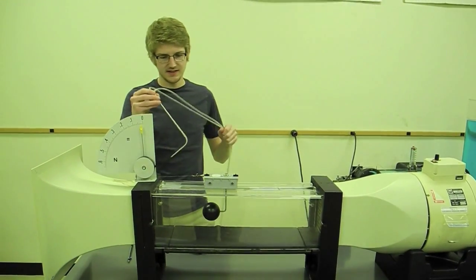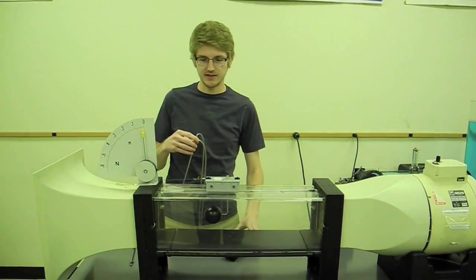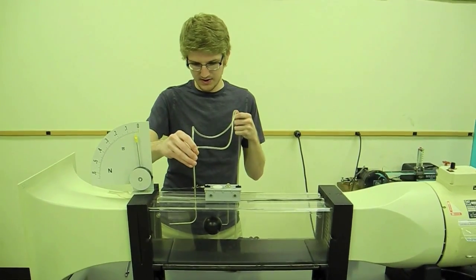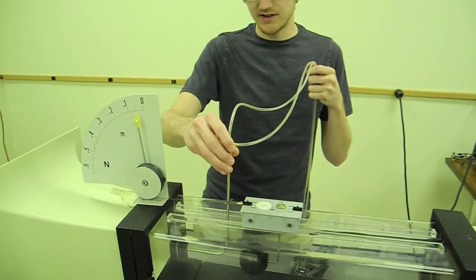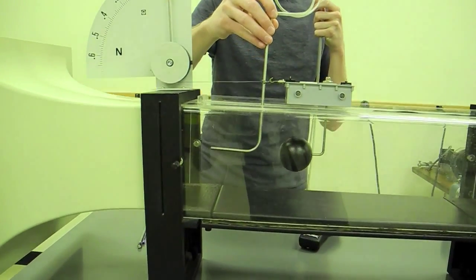Next, take the pitot tube attached to the digital manometer to get your pressure reading and velocity reading. Insert it in the slot on the top and hold it perpendicular to the flow, making sure it is level and directly into the flow. Otherwise, your readings will be errant.